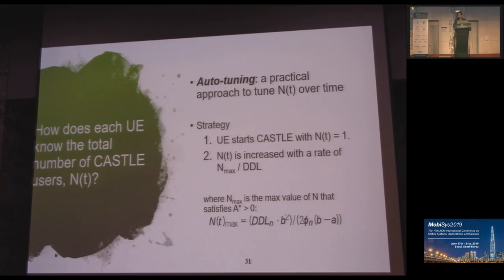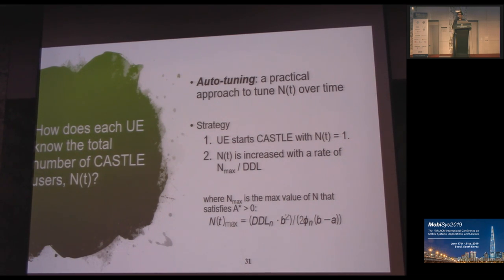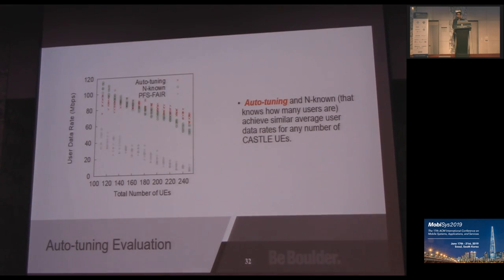Auto-tuning is the method we use to estimate the number of active UEs present in the cell. Using a CSMA-like technique, if there are no competing devices, no backoff is needed. We start by assuming n(t) equals one, where achievable throughput is maximum, and keep increasing n(t) until A-star, the threshold, is greater than zero. Comparing our auto-tuning technique against the n-known method — where the exact number of UEs in the channel is known — and a base station priority scheduling algorithm, auto-tuning performs similarly to n-known and sometimes even outperforms it after a period of time.